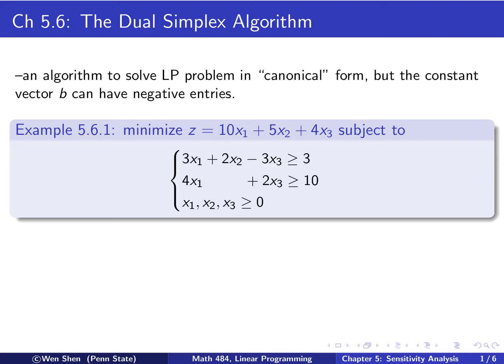We'll cover the algorithm and introduce it through an example. This is example 5.6.1. It says you want to minimize this objective function, subject to two constraints with a greater-than-or-equal sign. This is a main form of LP problem, and we need to rewrite it in standard form and canonical form before we can use the simplex algorithm.